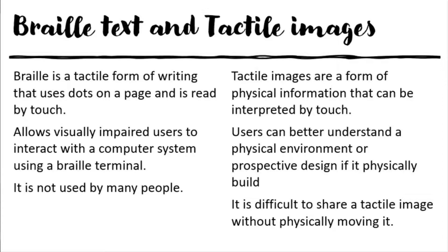First, let's talk about braille text and tactile images. Both are quite useful for visually impaired people and students — they help them read and understand text and context. Braille is an example of a tactile image because tactile images are images you can interpret by touch. Braille uses little dots on a piece of paper that you interpret through touch.